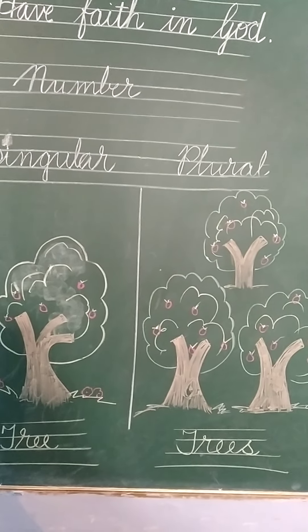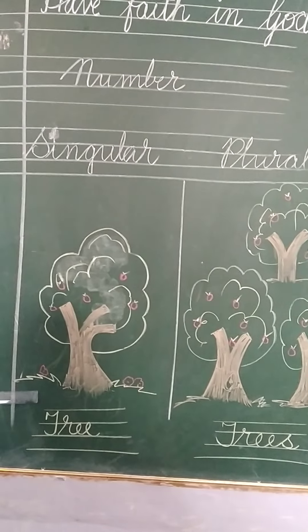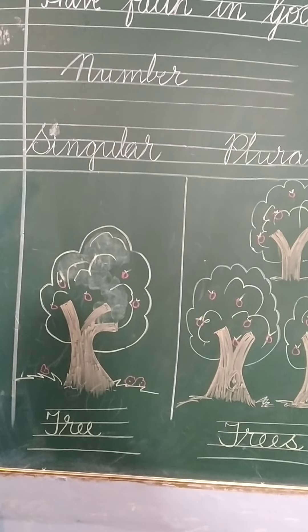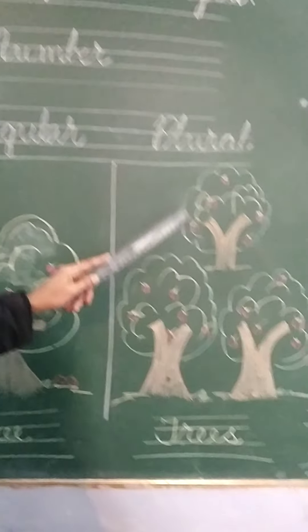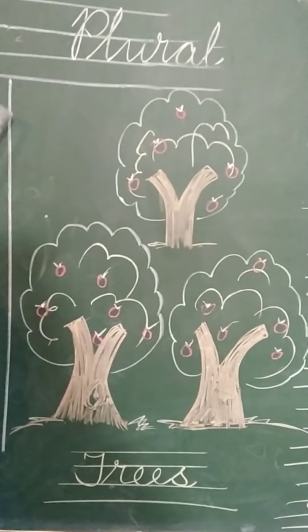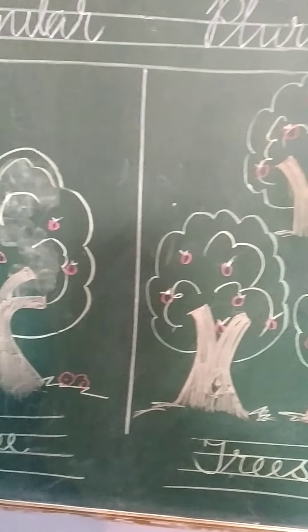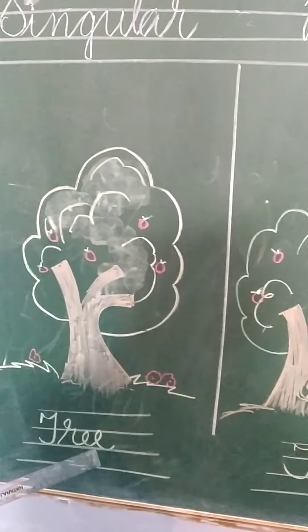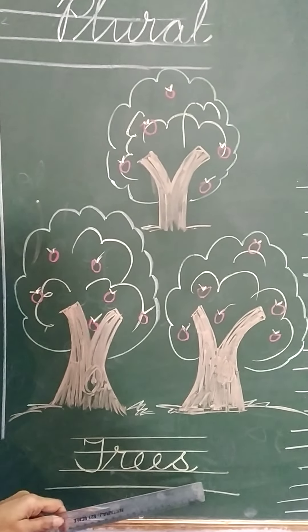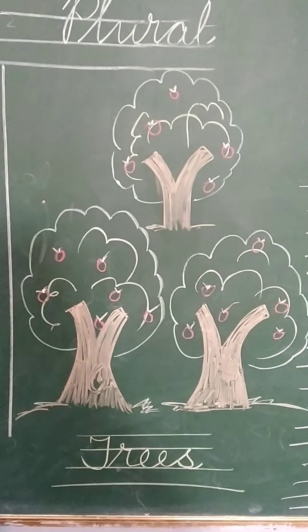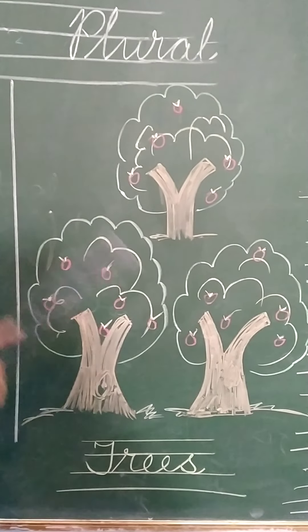You can see in the picture there is one tree — one tree, so it is called singular. More than one — one, two, three — so it is called plural. Trees: T, R, E, E, S. Trees.